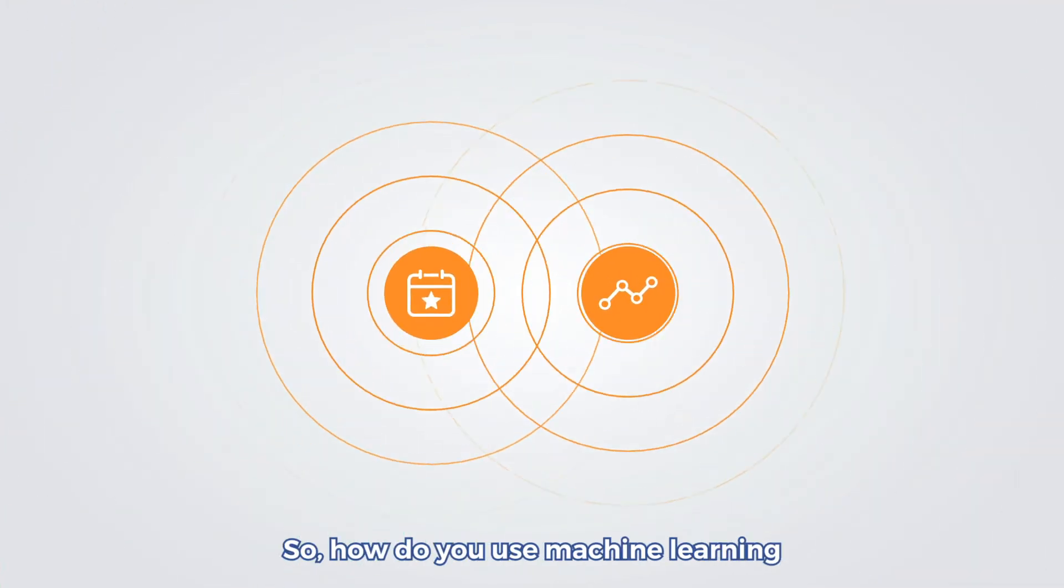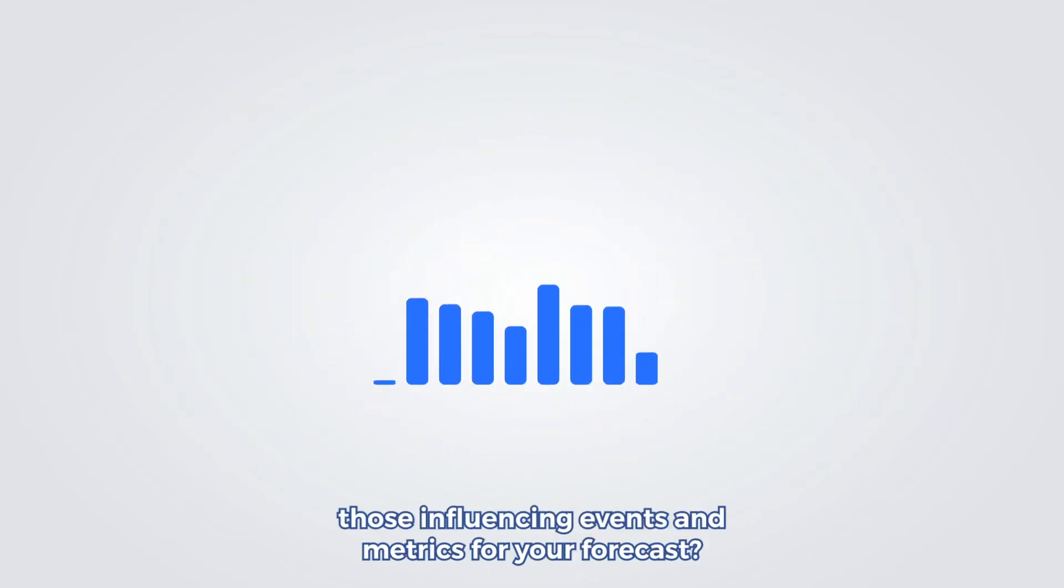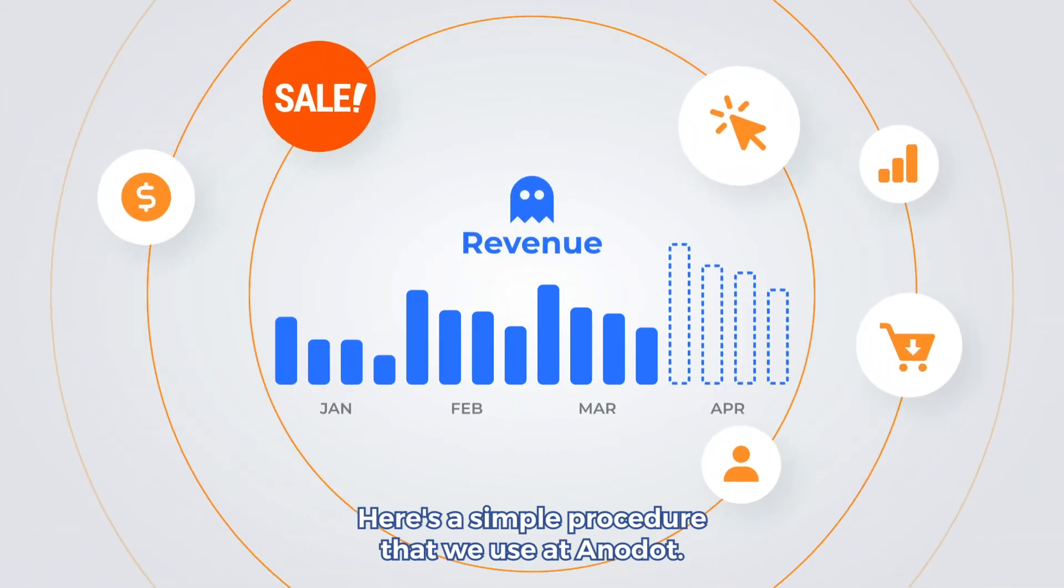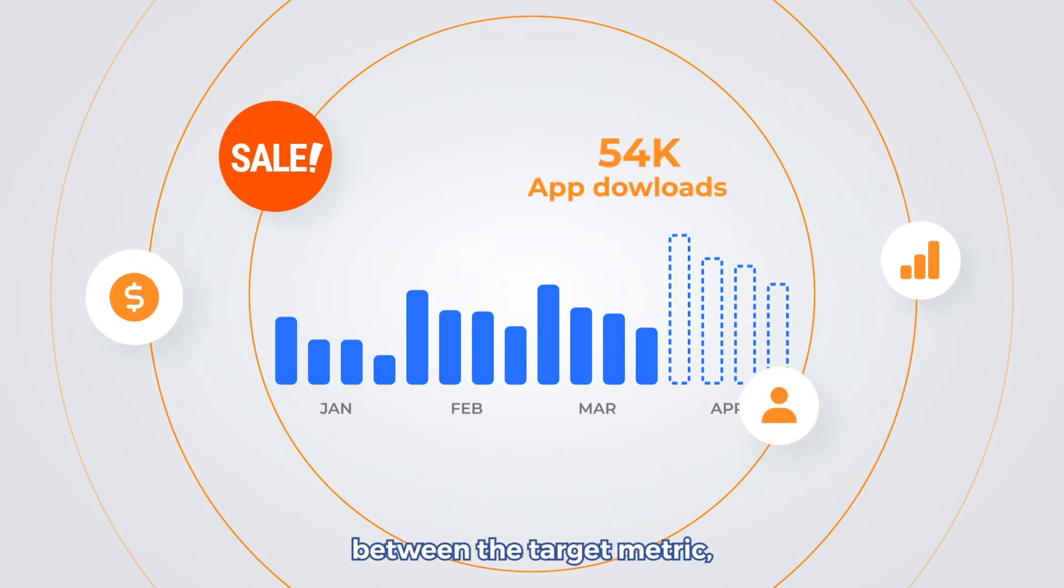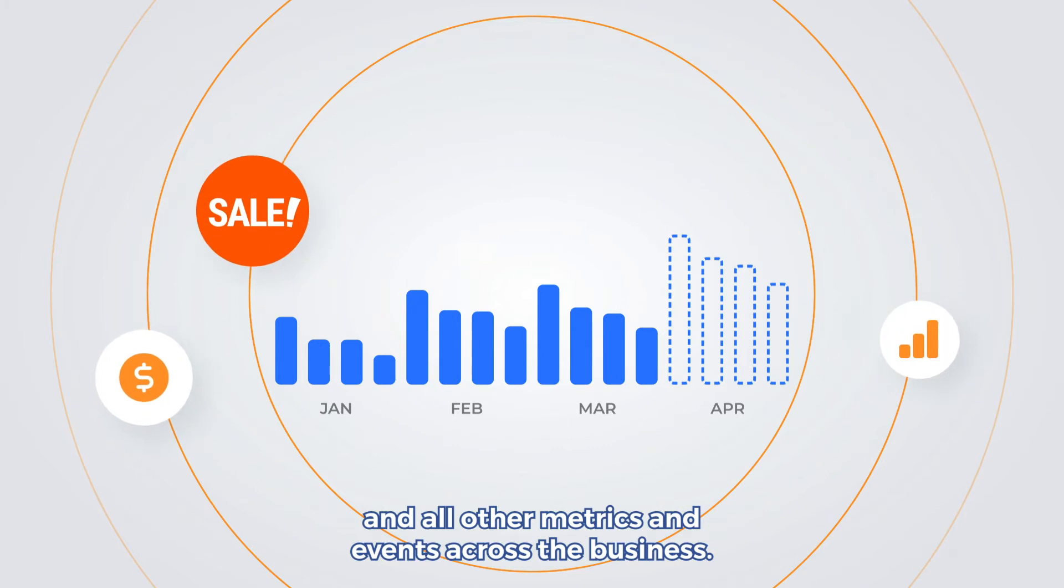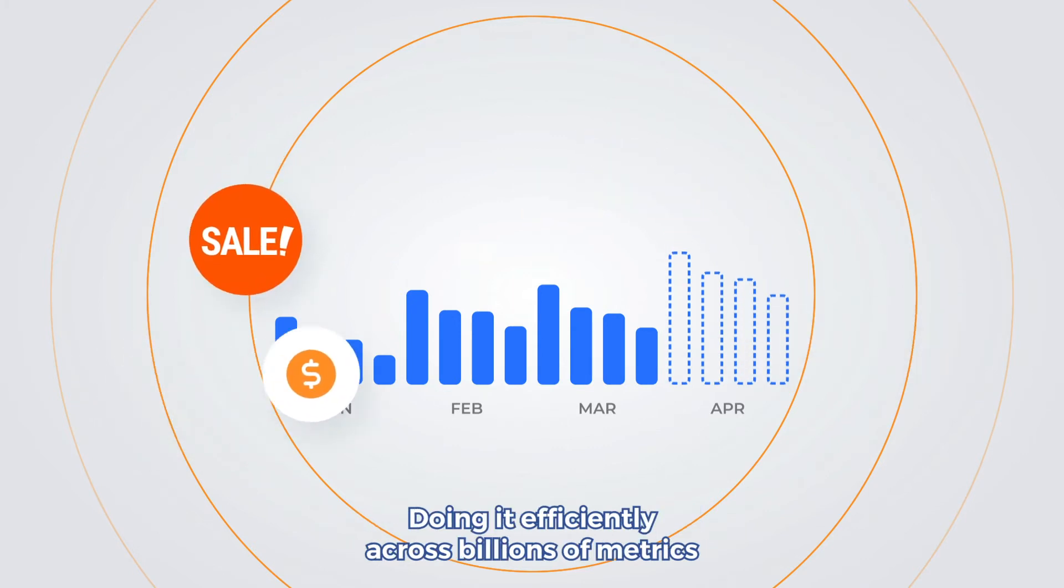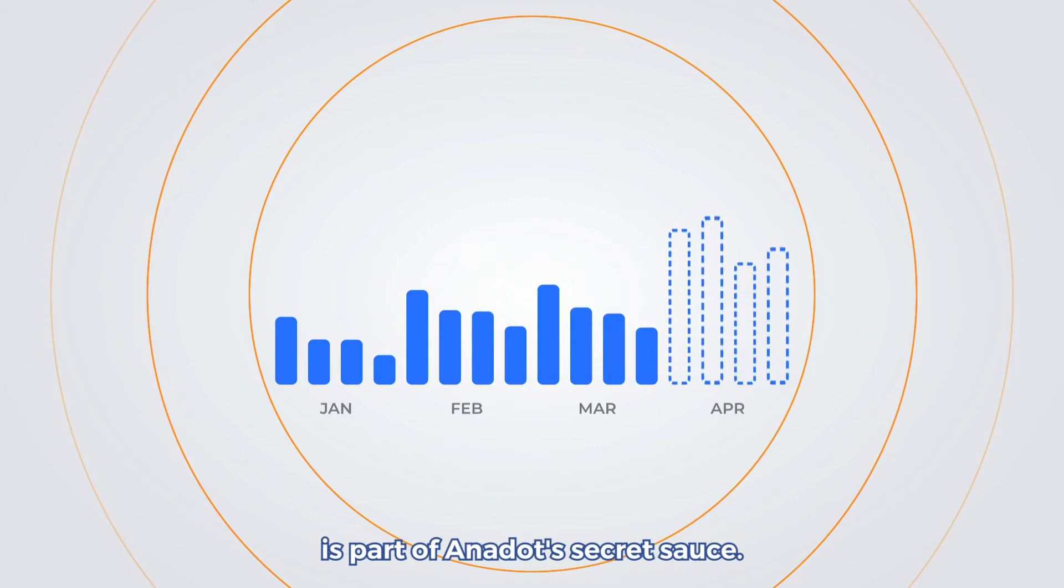So how do you use machine learning to automatically identify those influencing events and metrics for your forecast? Here is a simple procedure that we use at Anodot. The product computes the shifted correlations between the target metric, the revenue in the gaming example, and all other metrics and events across the business. Doing it efficiently across billions of metrics is part of Anodot's secret sauce.